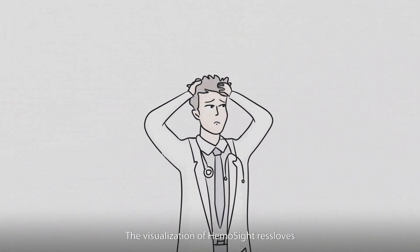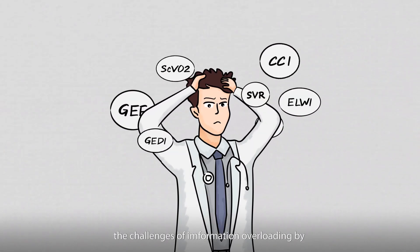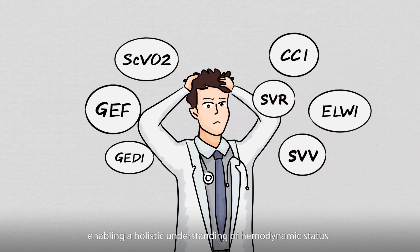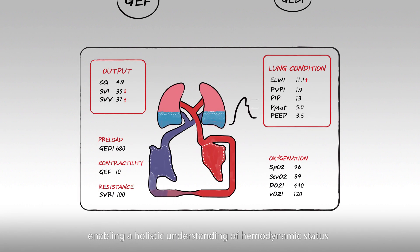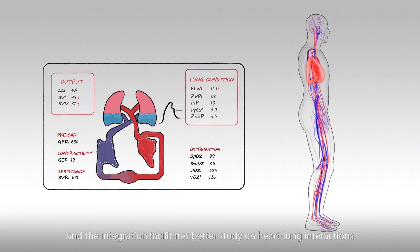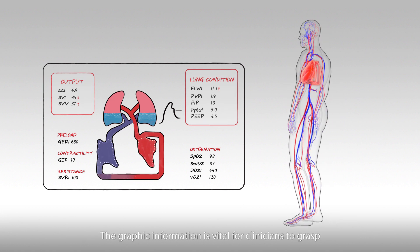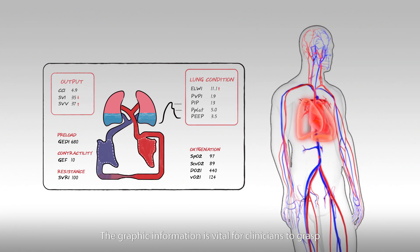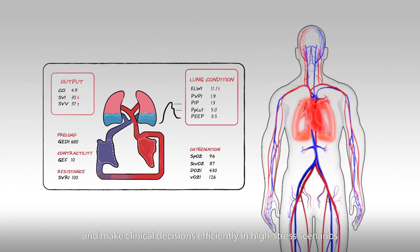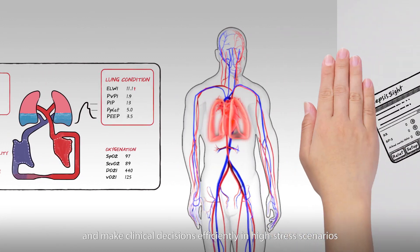The visualization of HemoSight resolves the challenges of information overloading by enabling a holistic understanding of hemodynamic status, and the integration facilitates better study of heart and lung interactions. The graphic information is vital for clinicians to grasp the patient's status within seconds and make clinical decisions efficiently in high-stress scenarios.